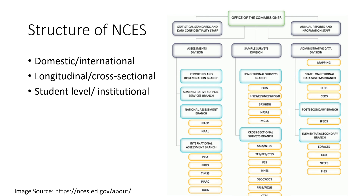A little bit about the structure of NCES: broadly speaking, it's divided into three parts — three sections under which different surveys and data collecting mechanisms fall. The first is the Assessments Division. Some of the more common surveys you may encounter here include the NAEP, the National Assessment of Educational Progress, a periodic indicator of educational progress for the states and the U.S. as a whole, as well as international assessments such as PISA and TIMS, which collect education statistics for the United States and other countries.